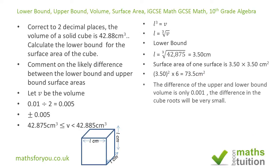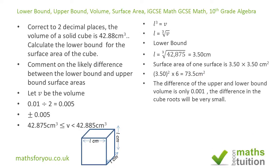There will be very little difference between the surface area of the upper bound and lower bound. We are working to three decimal places for the volume, and when we take the cube root the difference becomes even smaller. There is only 0.01 difference between the upper bound volume and the lower bound volume, so the surface area will vary by very little between the lower and upper bounds.